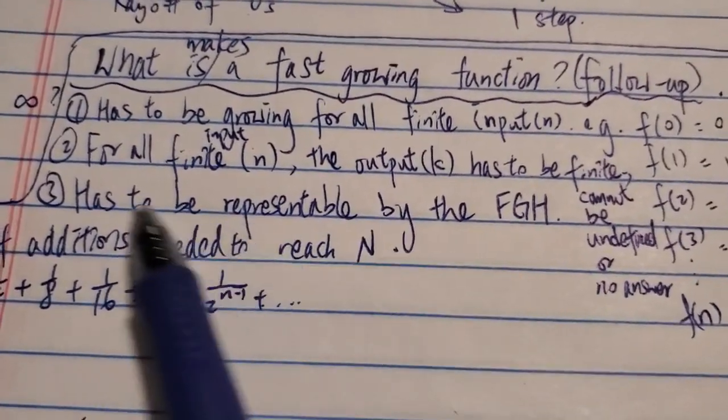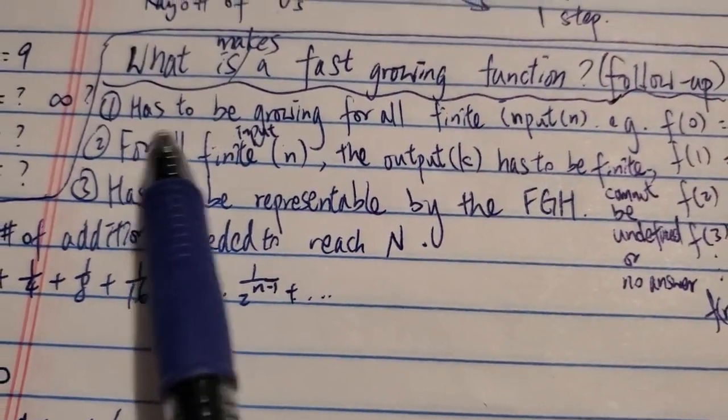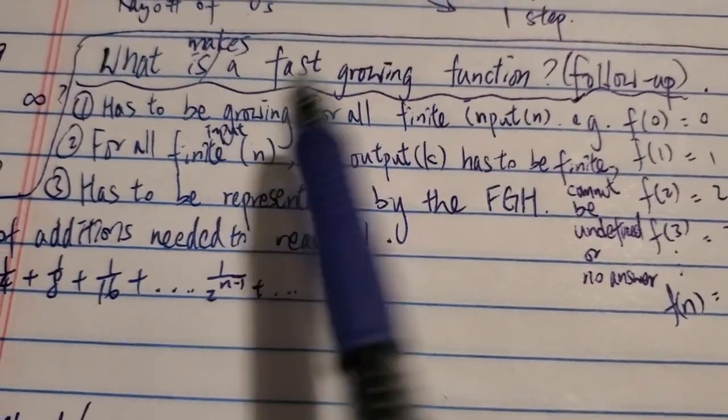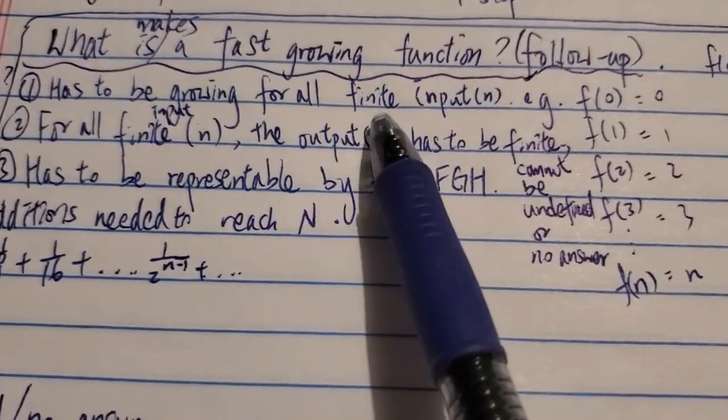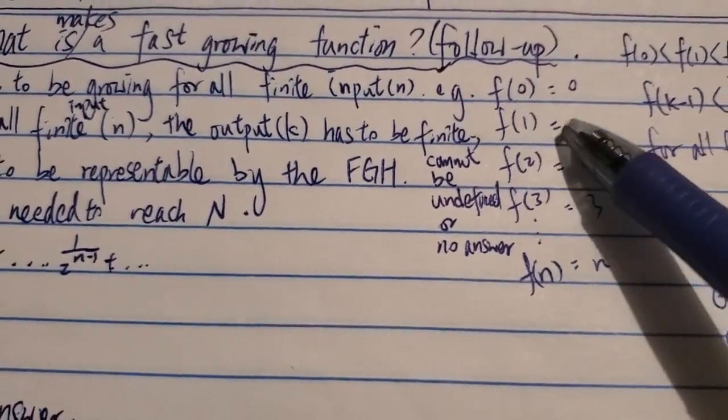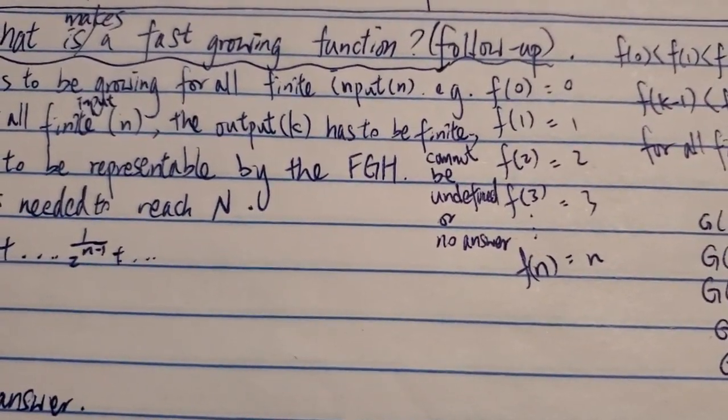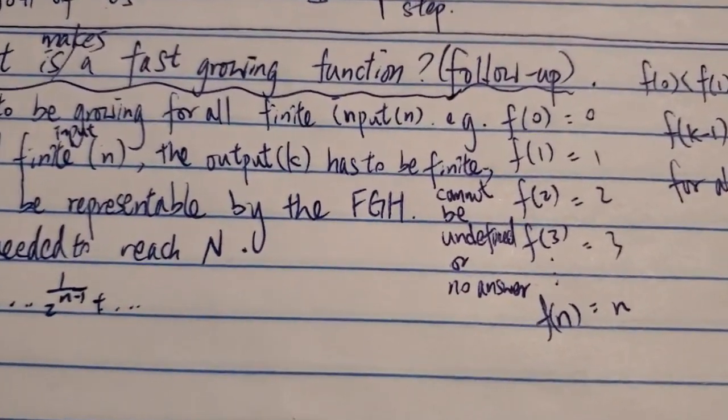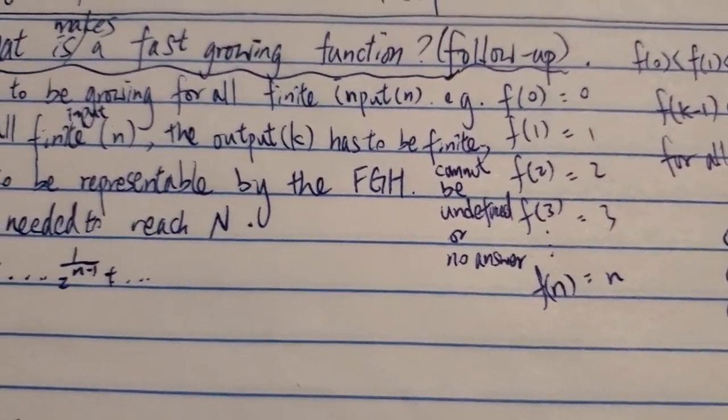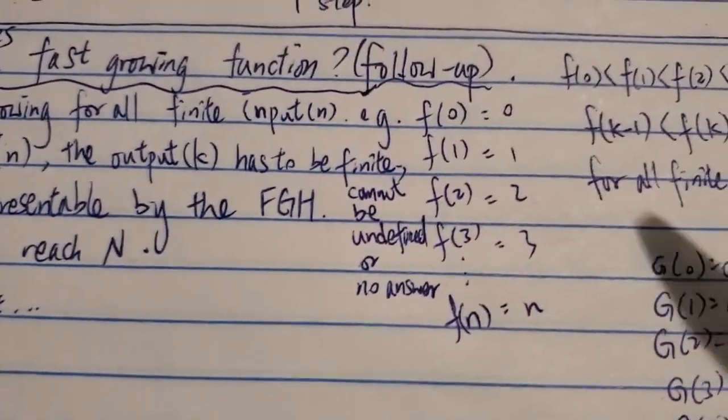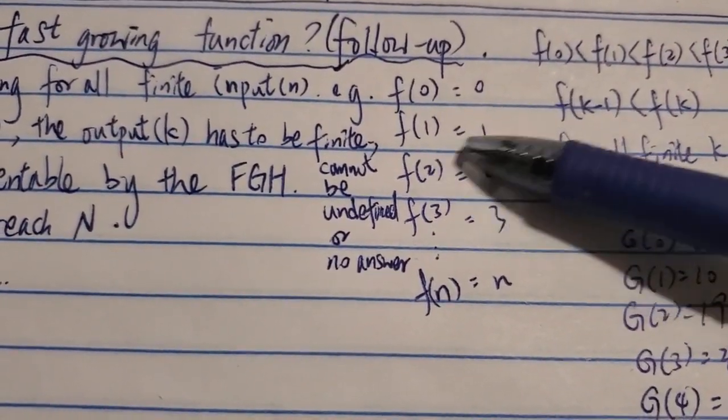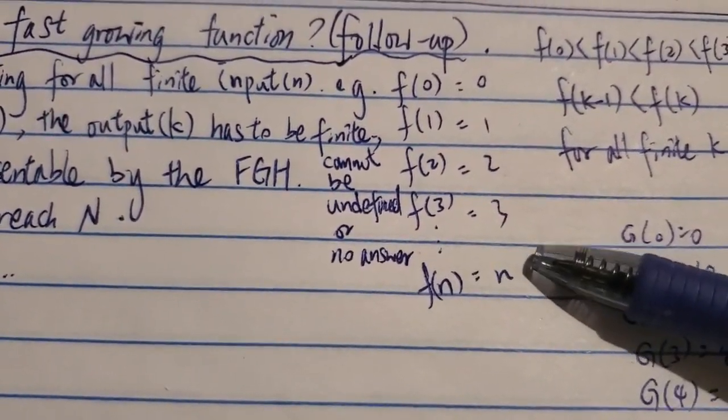So first of all, most people said that in order to be a fast-growing function, the function of course, f(n), has to be growing for all finite input n. Then each input, n is a finite or a positive integer. It has to be growing for all finite n. So this is one example here. So f(0) is 0, f(1) is 1, f(2) is 2, f(3) is 3, etc.